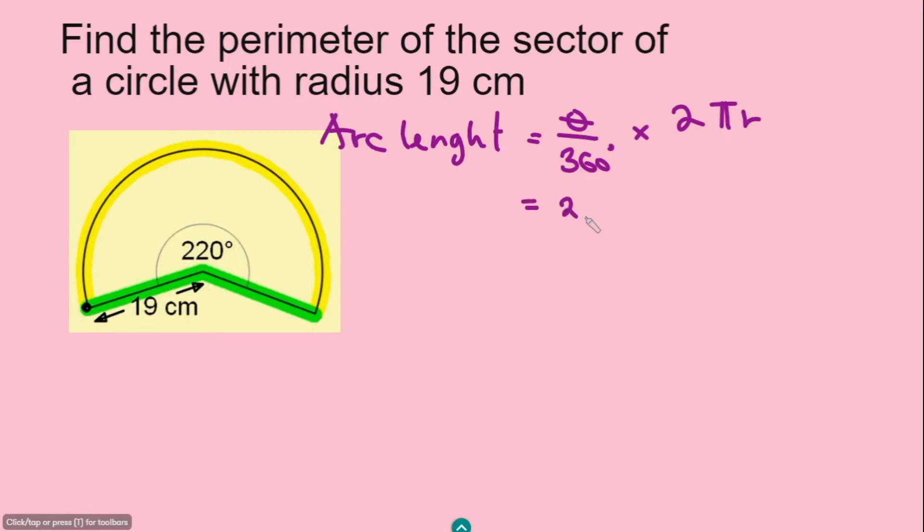Now we know the angle here is going to be 220 degrees, and divide this by 360 degrees, and then multiply this by 2 times pi. Now pi is 3.142, and then multiply this by the radius which is 19.